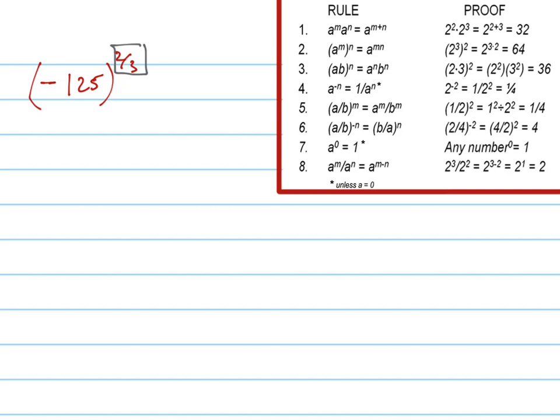And really what we're thinking about is you're looking at rule number two. You can break this up into negative 125 to the one-third, all squared.